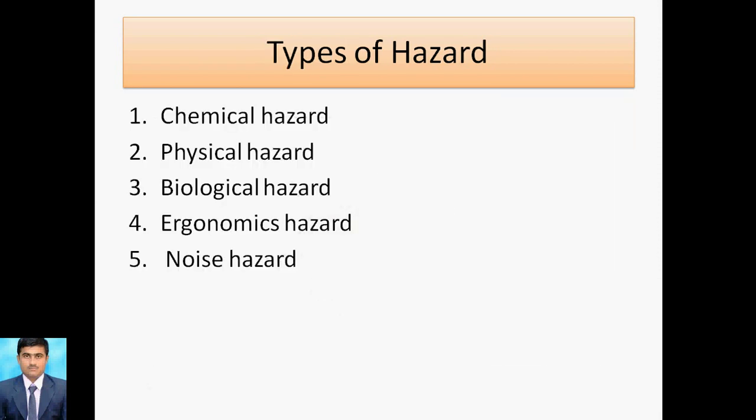Now we look at the types of hazards. First is the chemical hazard — this is because of chemical contact with a person or operator. Next is the physical hazard — this type of hazard involves physical contact with machines or any other devices, handling devices, or explosive devices. Then there is biological hazard — when worms or insects come into contact with a person, that impacts a biological hazard.